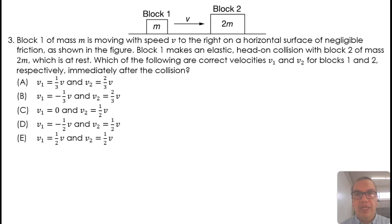Block 1 of mass m is moving with speed v to the right on a horizontal surface of negligible friction, as shown in the figure. Block 1 makes an elastic head-on collision with block 2 of mass 2m.